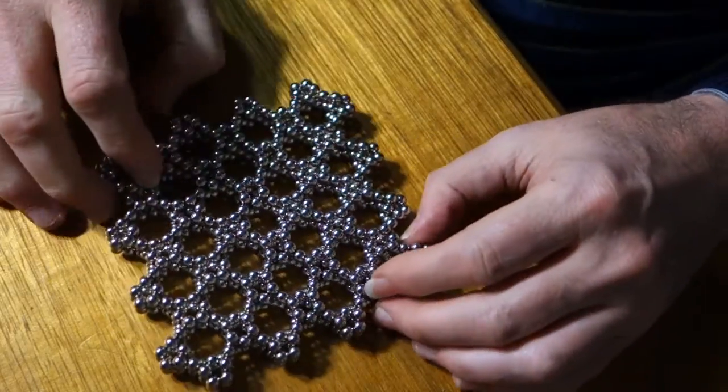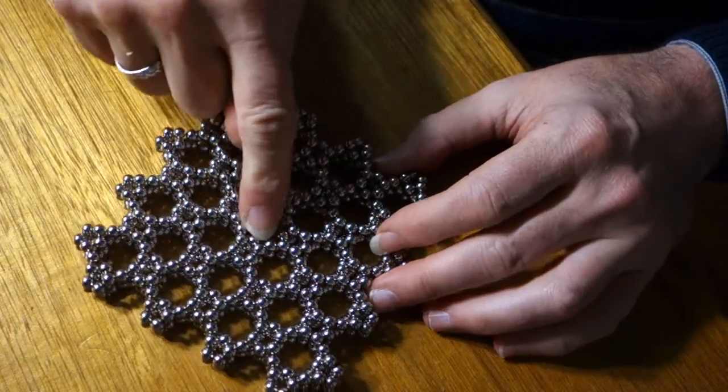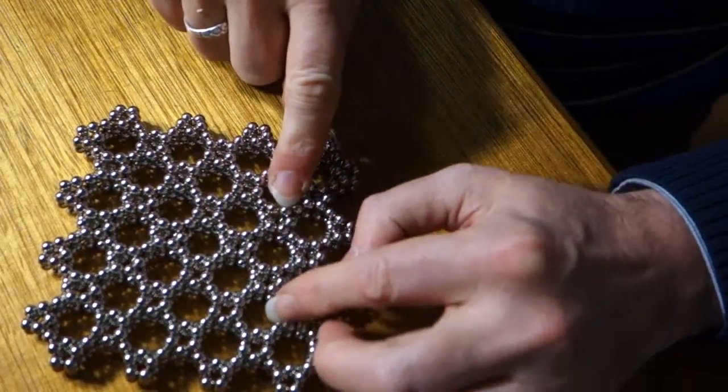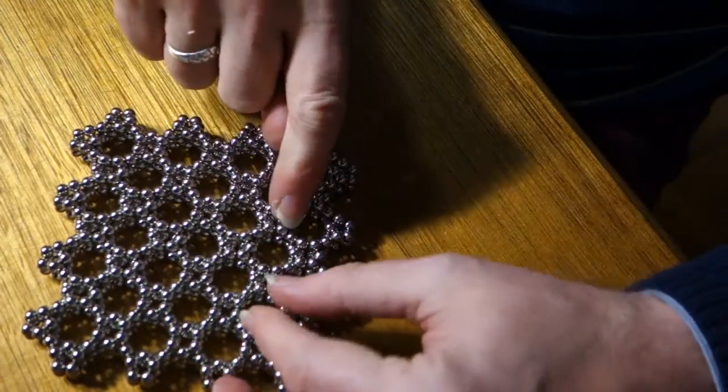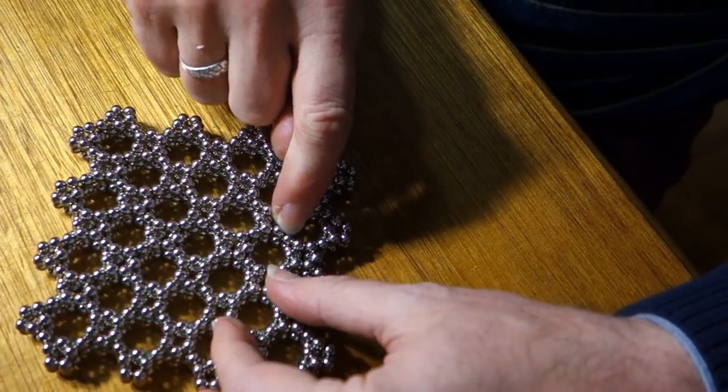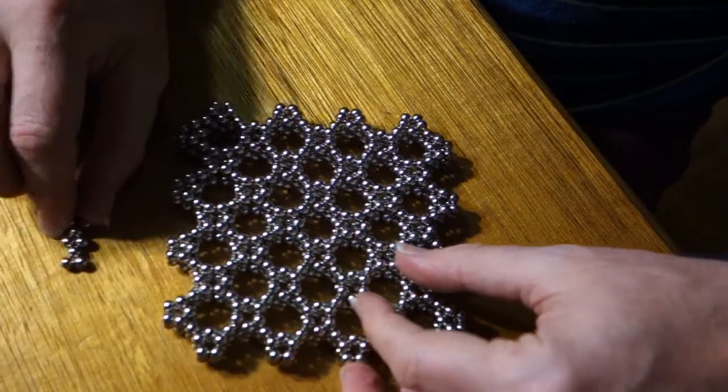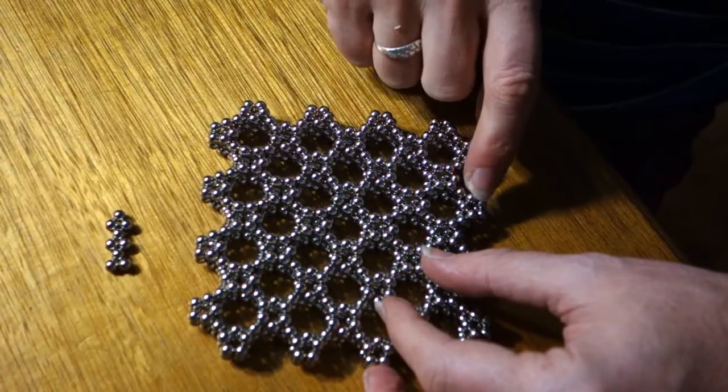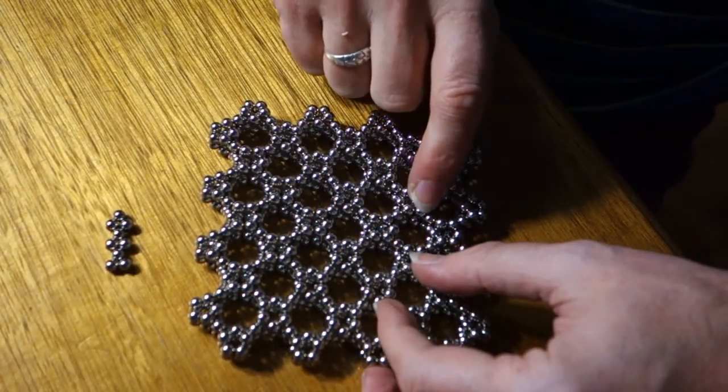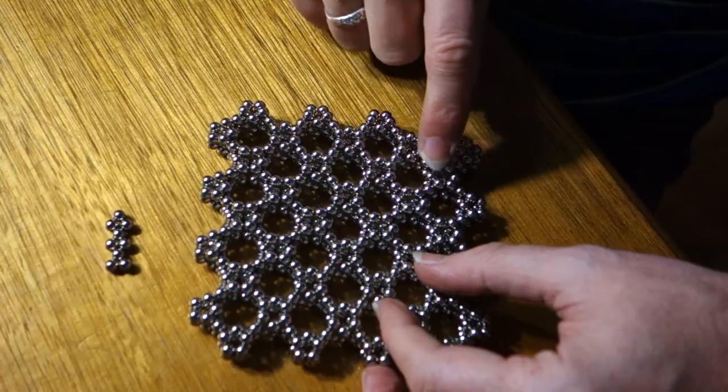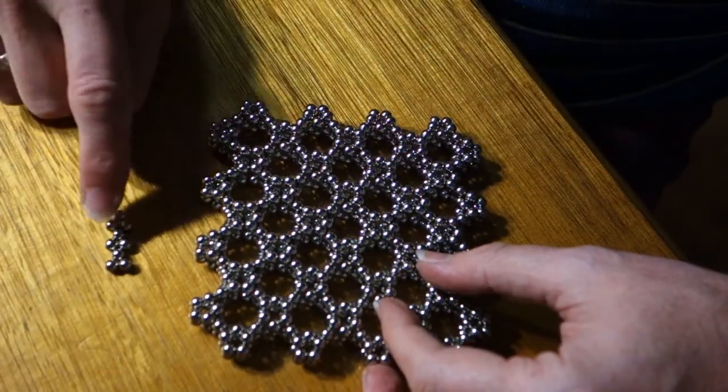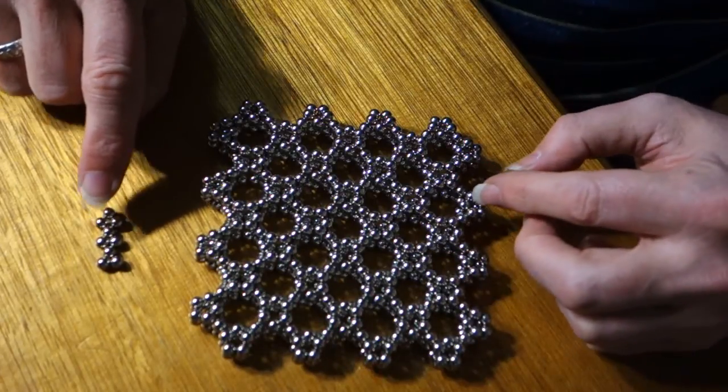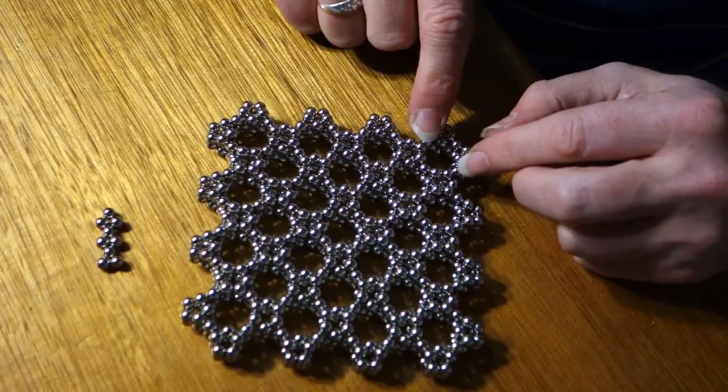That started with an inner ring of four and all the straight parts had just three additional high spots on the little triangles. So the high spots, one, two, three, and then one into each of the tags. And then at the corners there's always five of those little triangles.